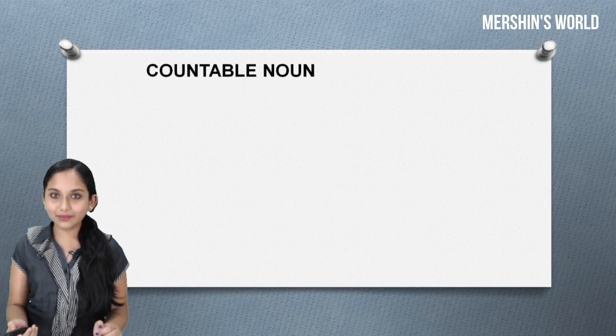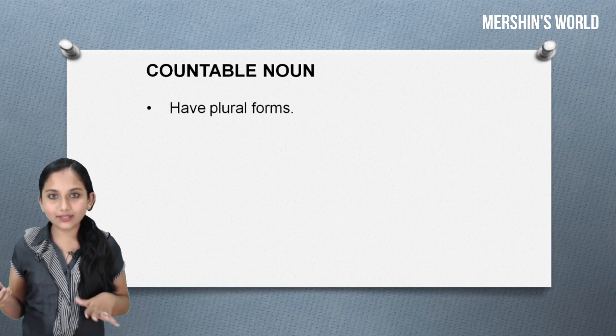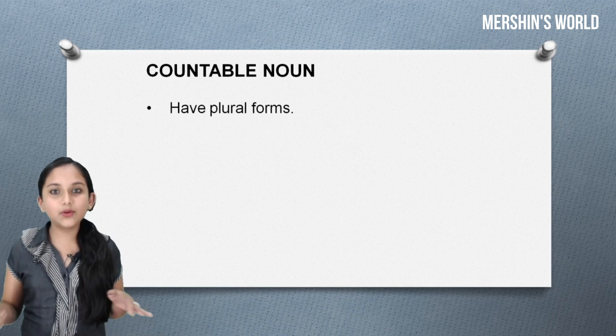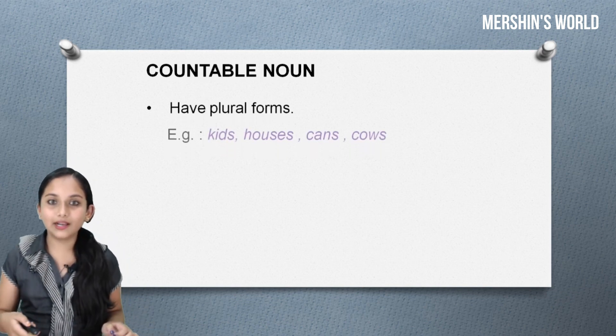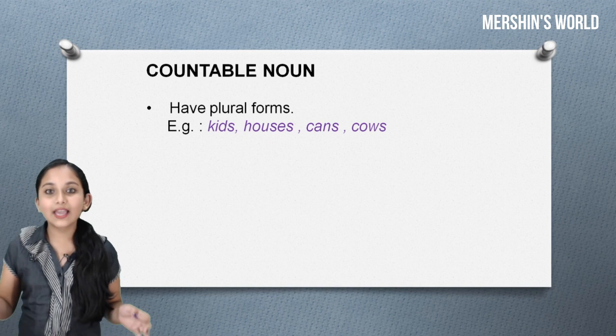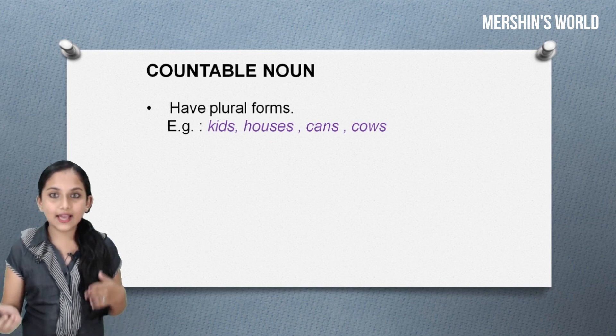First, let's see countable nouns. Countable nouns have plural forms. Examples: kids, houses, cans, cows.